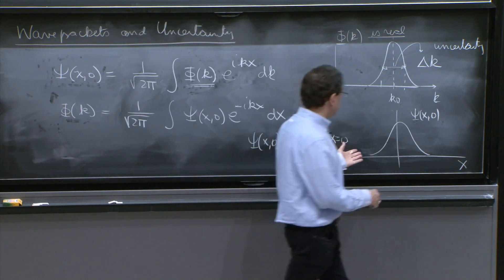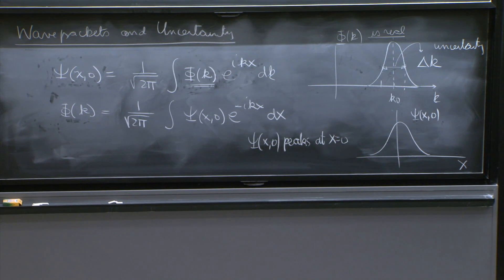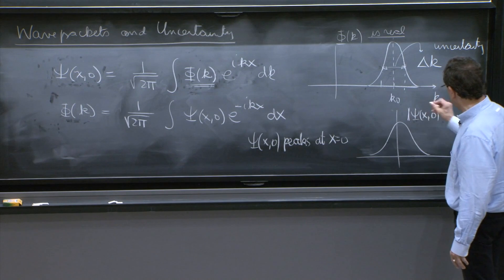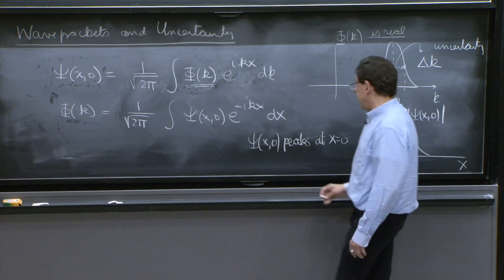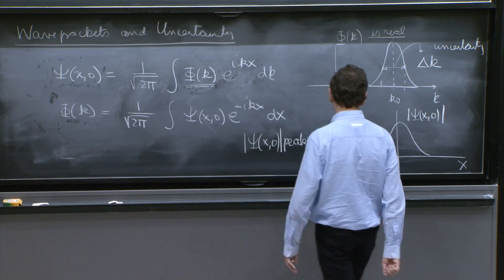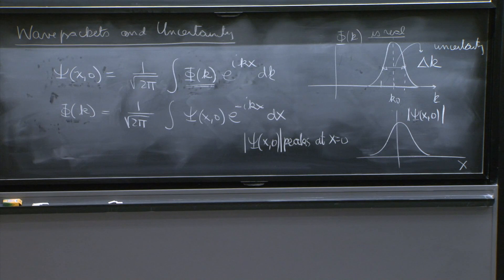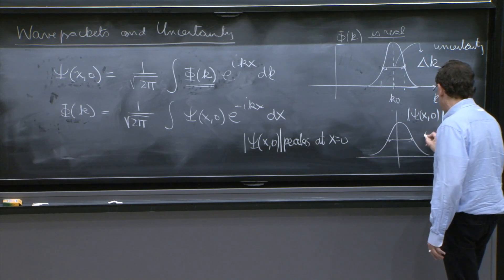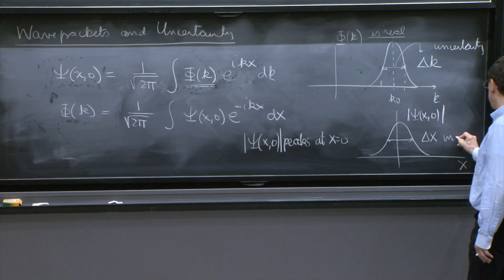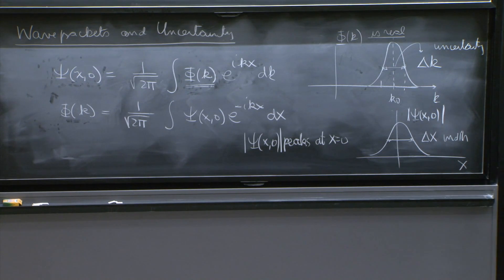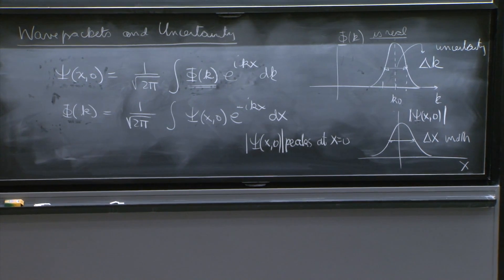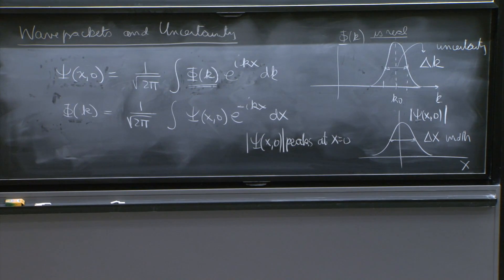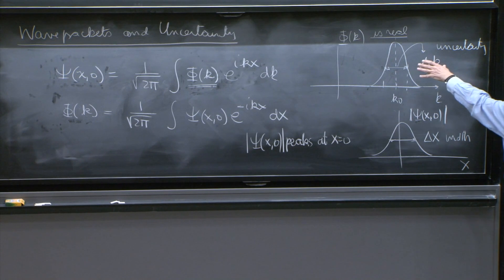So when we say it peaks at x equals 0, how am I supposed to plot ψ? Am I plotting the real part, the imaginary part, the absolute value? So it's reasonable to plot the absolute value and to say that |ψ| peaks at x equals 0. And there will be some width, again, here, Δx width. And that's the uncertainty in ψ of x. So the whole point of our discussion for the next 10 minutes is to just try to determine the relation between Δk and Δx and understand it intuitively.